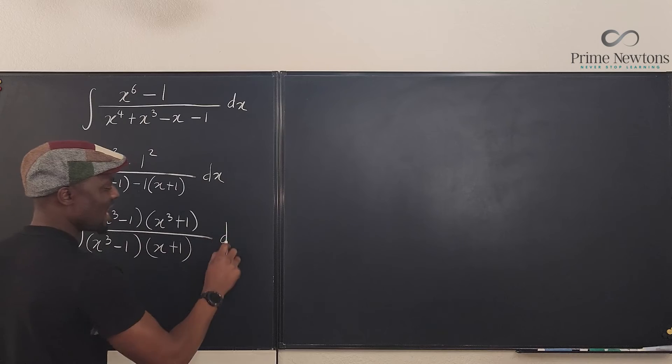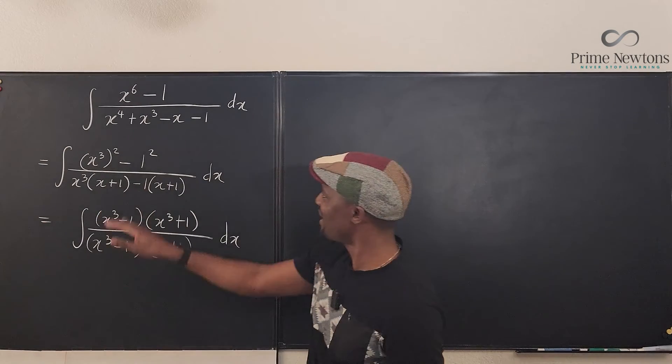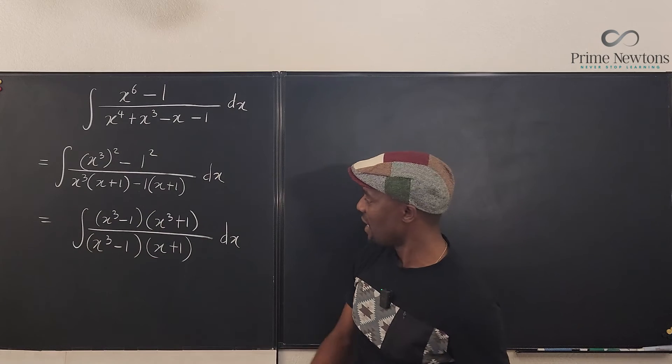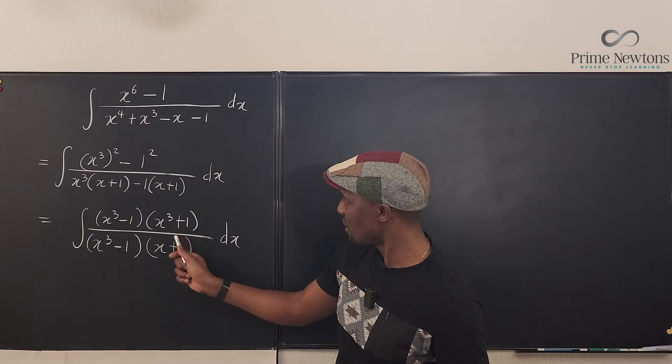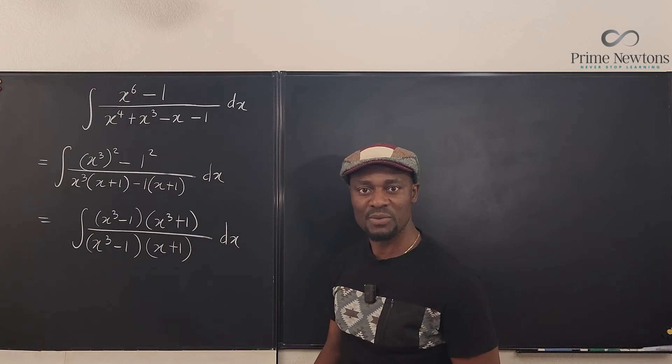Nice! Do you see how nicely this simplifies out just because we did this trick on top? Okay, now this is going to cancel this out, so that your integral is basically x cubed plus one over x plus one.